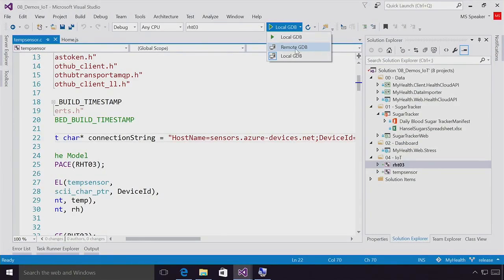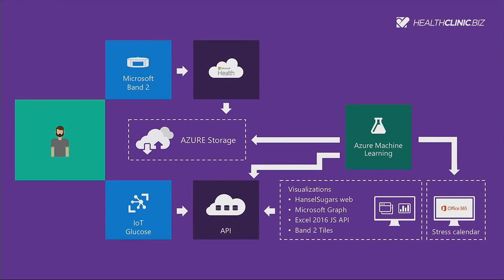Let me bring it back to the slides. This is Azure — all these icons, all these people doing all these things. Let's focus on the system I'm building. I've got my band, which goes to Microsoft Health and ultimately into storage. My glucose system goes up into an API and I pull that data in as well. I've got heart rate data and blood sugar over years. I'm going to show you visualizations, graphs, plug things into Office, and see if Azure Machine Learning can answer interesting questions about my health.